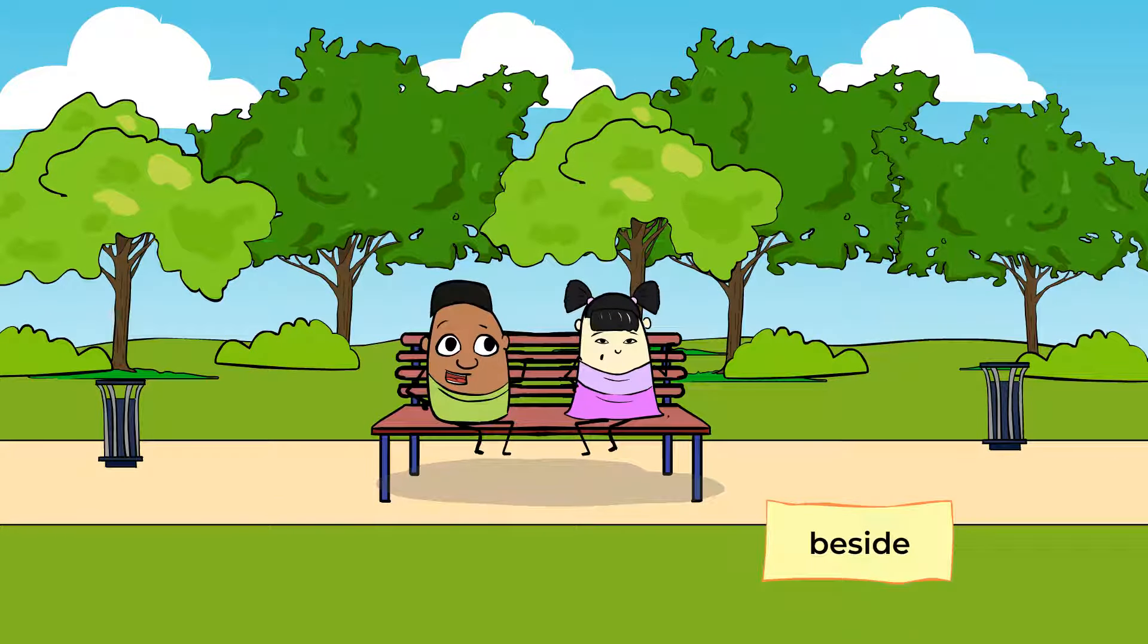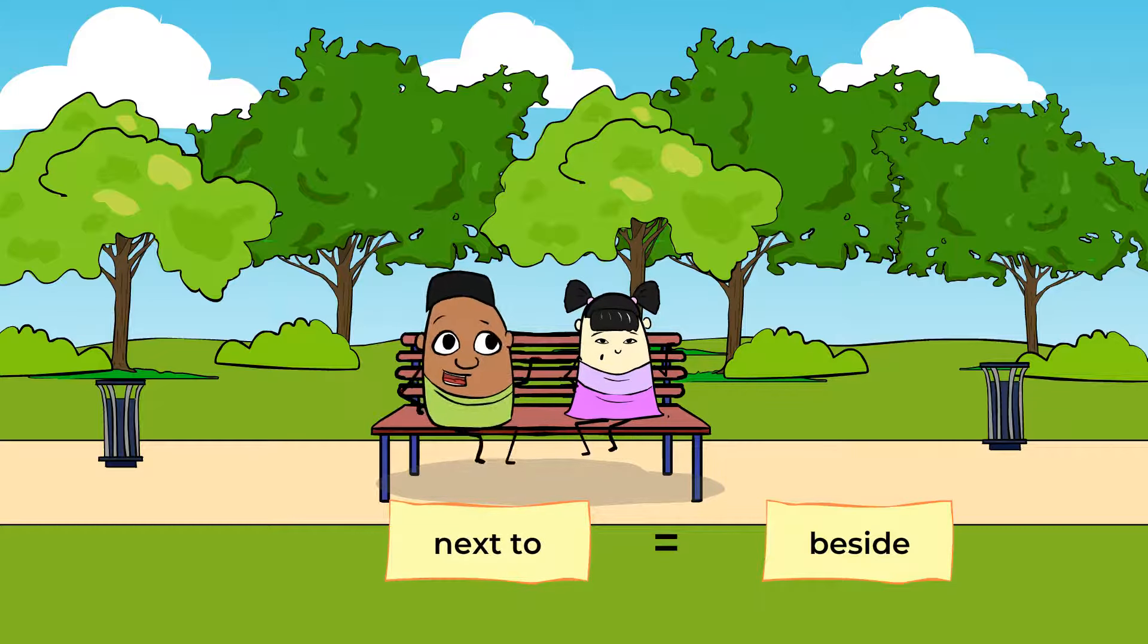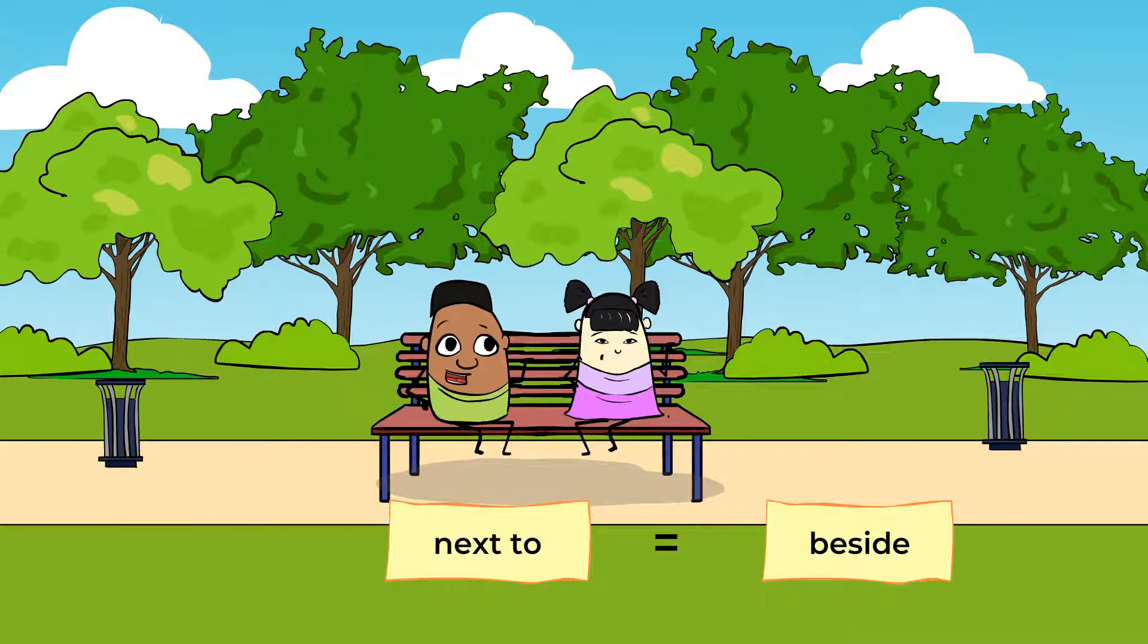Beside, that means on the side of. We can also say next to. Like, Sue is sitting next to Will. Will is sitting next to Sue. Sue and Will are sitting next to each other.